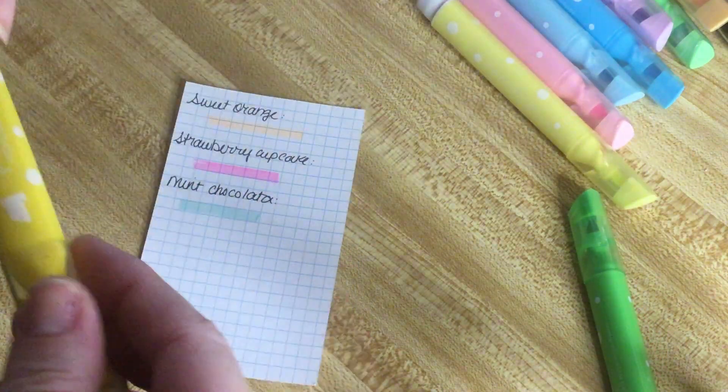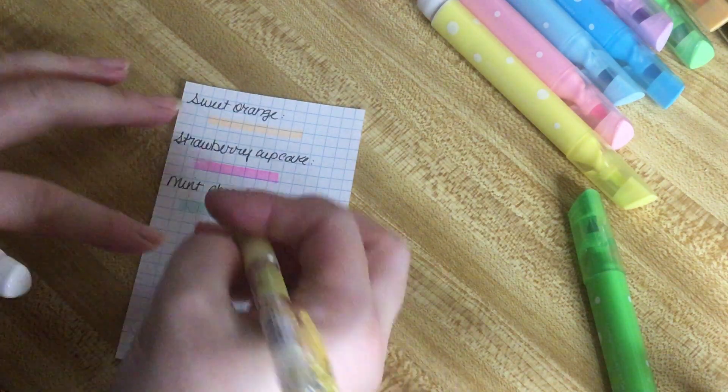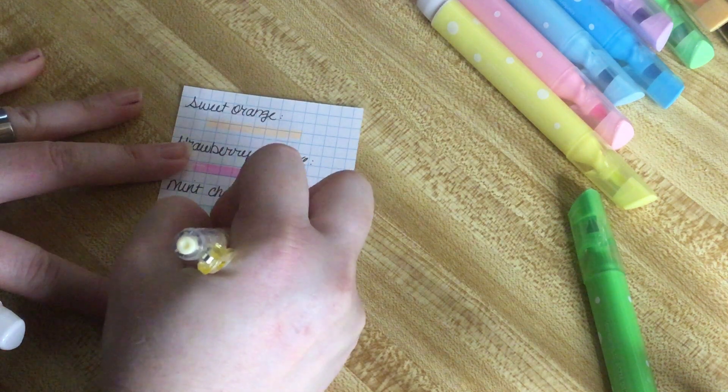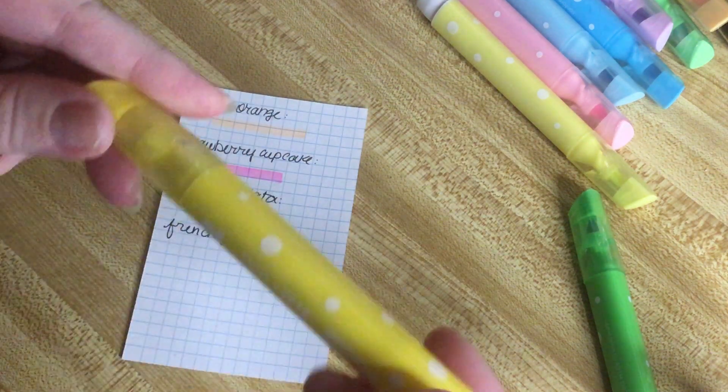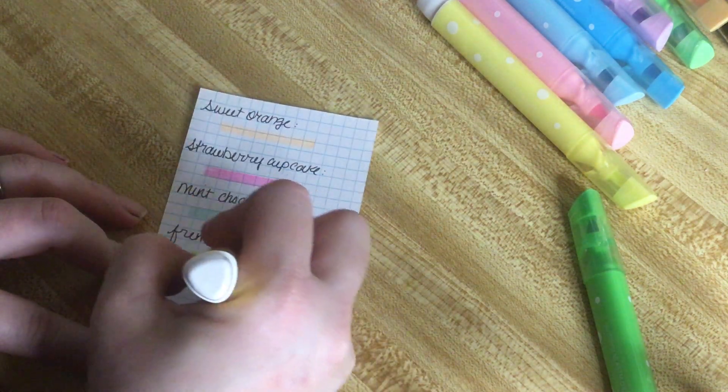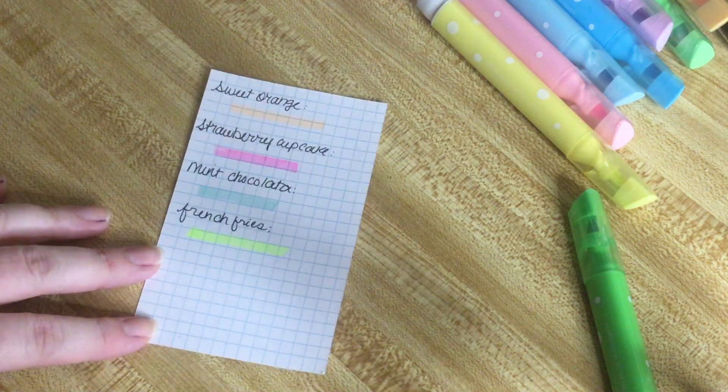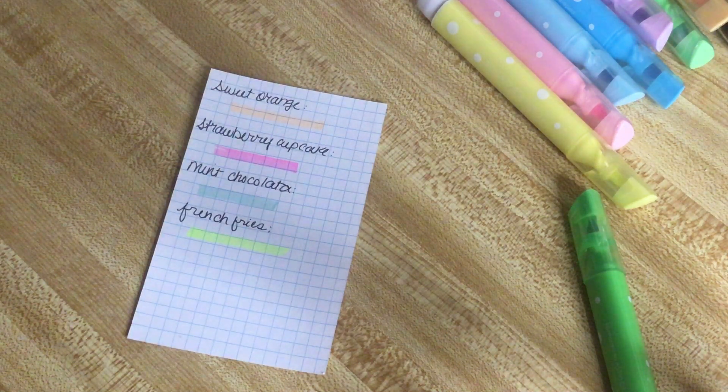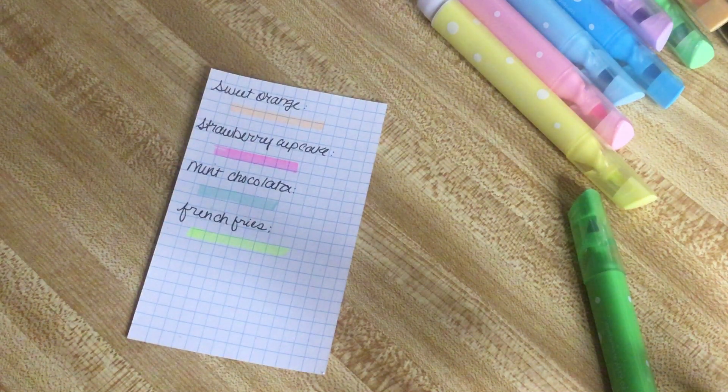The next one is called French Fries. This one's more of a fun one I guess, but this one's more like the standard yellow. It is very bright yellow. This doesn't smell like french fries, it smells like cleaner as well. That one's a no-go too.